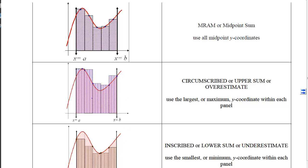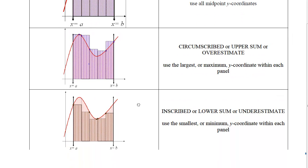Our final two types are circumscribed and inscribed. For circumscribed, also called an upper sum or overestimate, we choose the x-value that generates the highest y-coordinate and use that to compute the rectangle's area — the sum of all rectangles will be larger than the true area. Conversely, for inscribed, or a lower sum or underestimate, we use the x-coordinate that generates the smallest y-coordinate in every sub-interval, resulting in an estimate always less than the true area.